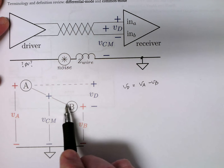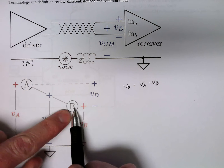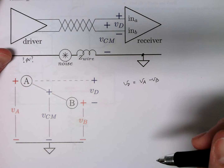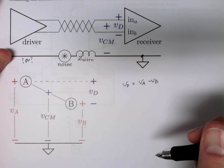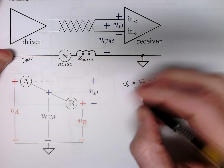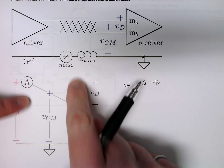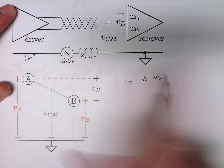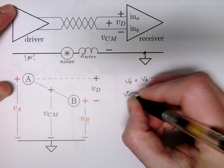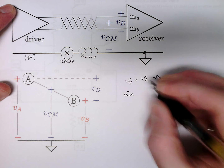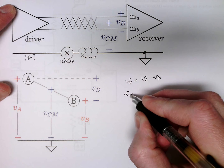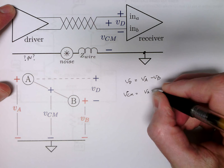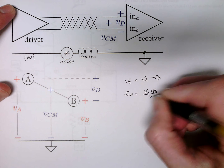We go plus-minus this way, and we can also change our sign to go B minus A — it just depends on how you define it, so watch out for the sign. Common mode is a little different. Common mode is like a seesaw going up and down — it's just the average of the two voltages. So VCM is VA plus VB over two.